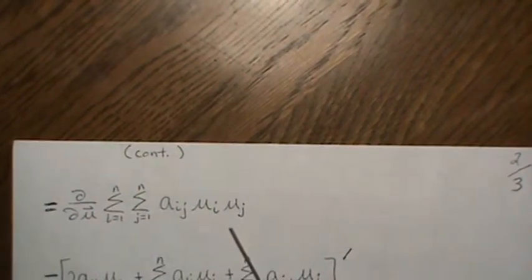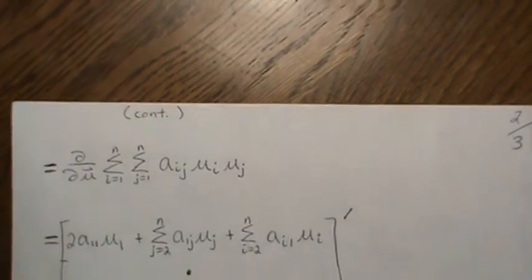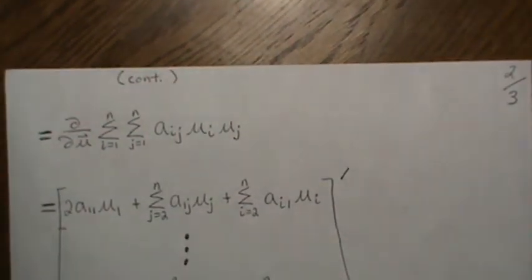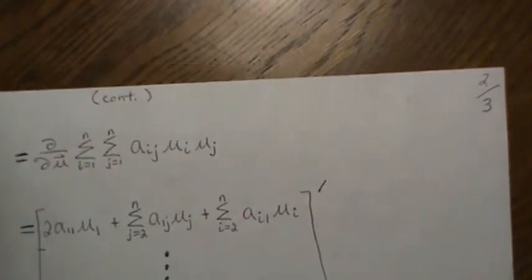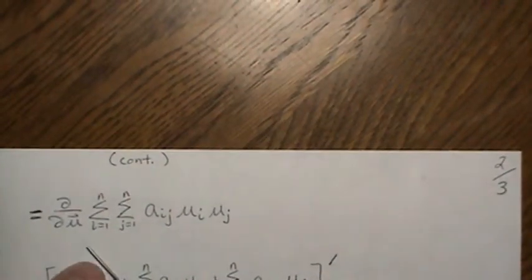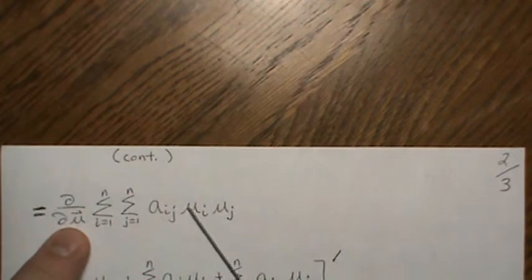Many of you can go straight to this double sum, but I'm not skipping steps in this video. Now we want to take the derivative of this sum with respect to the vector μ. Since this is a scalar and we're taking it with respect to a column vector, the answer will be a row vector. I'll write it as a column vector with a prime, which means it's a row vector.